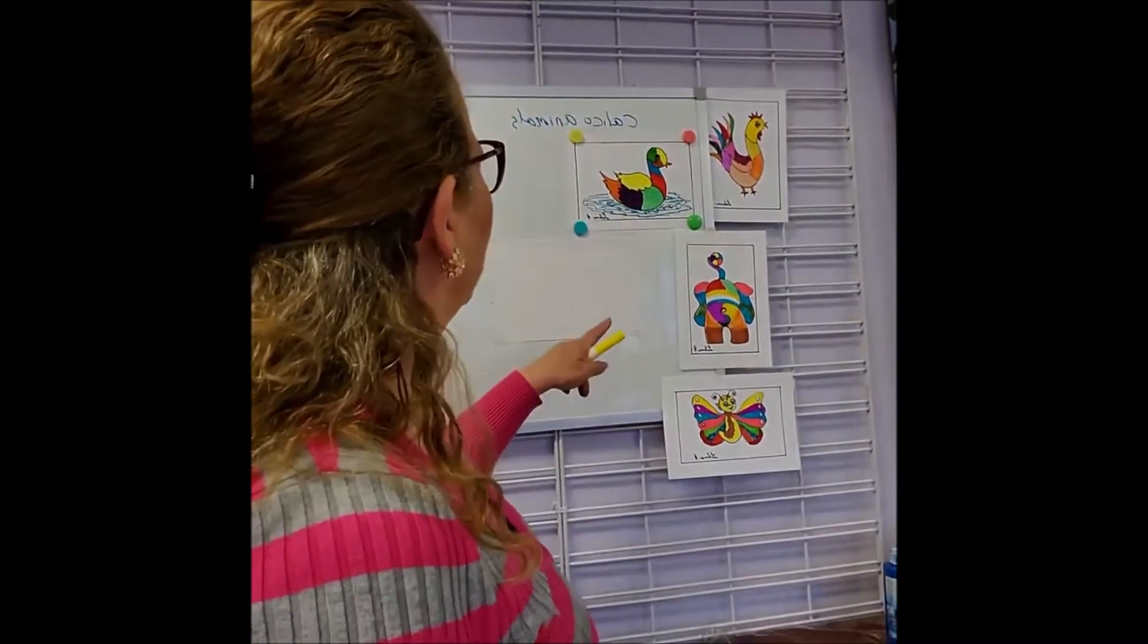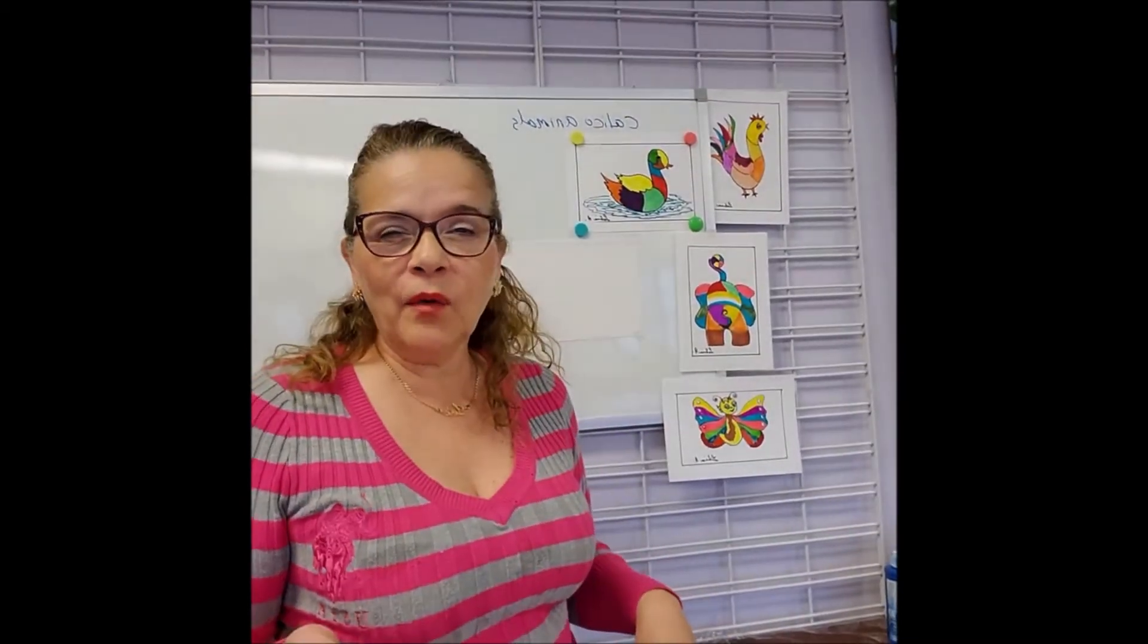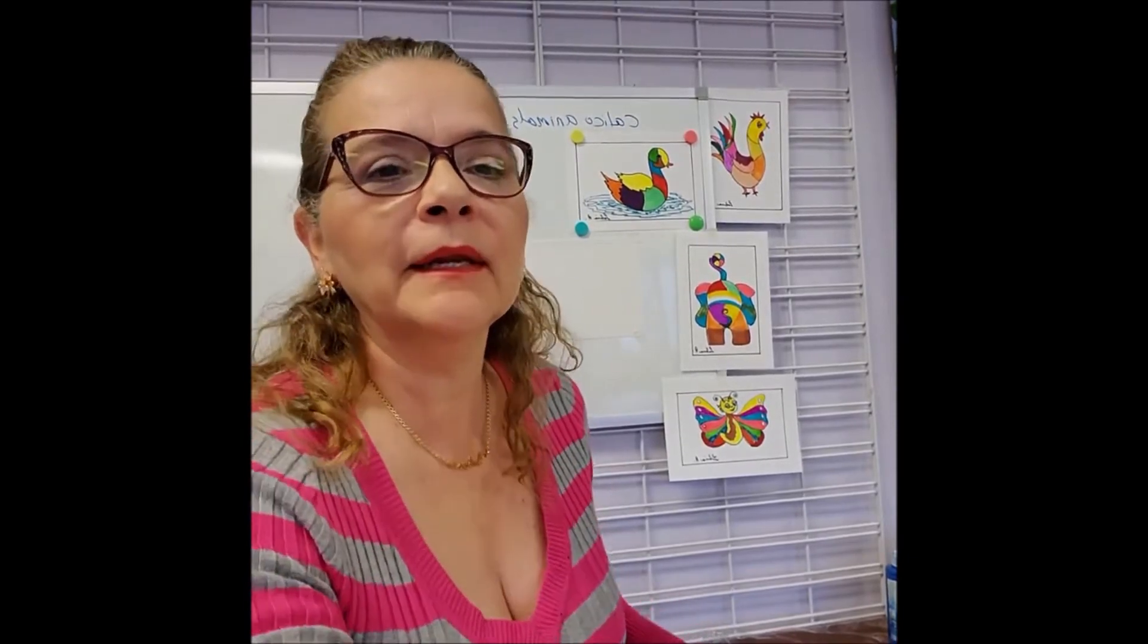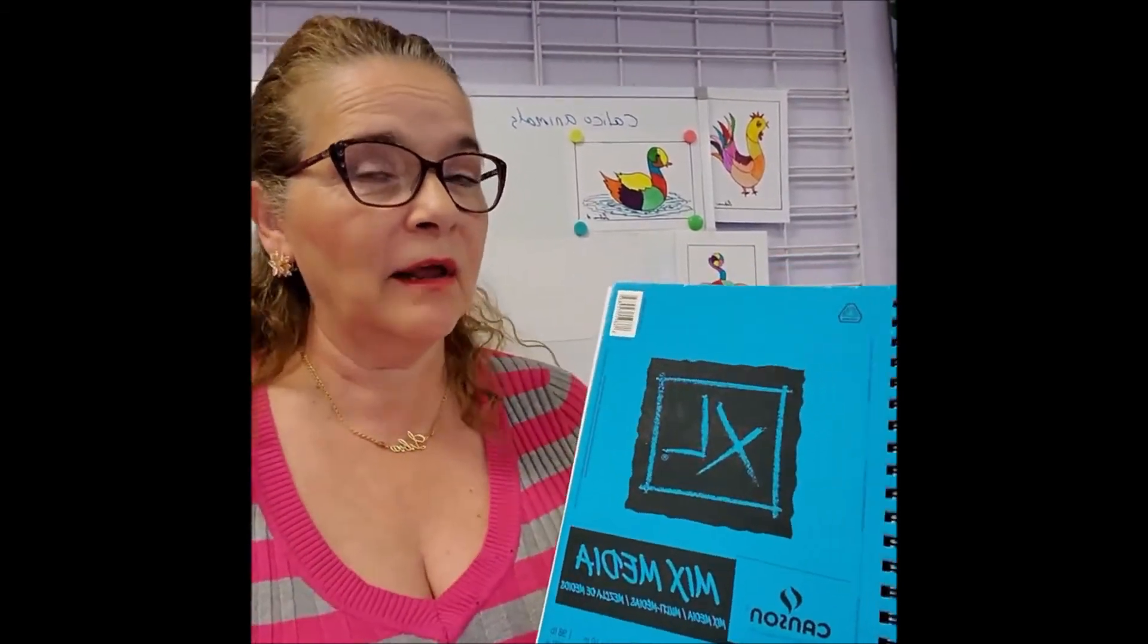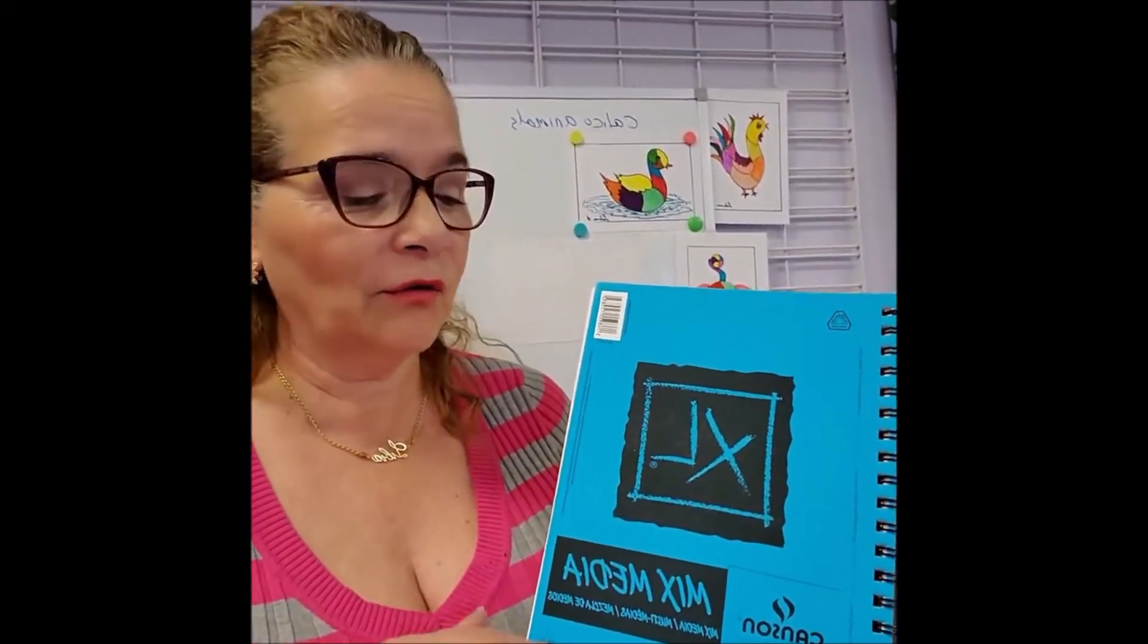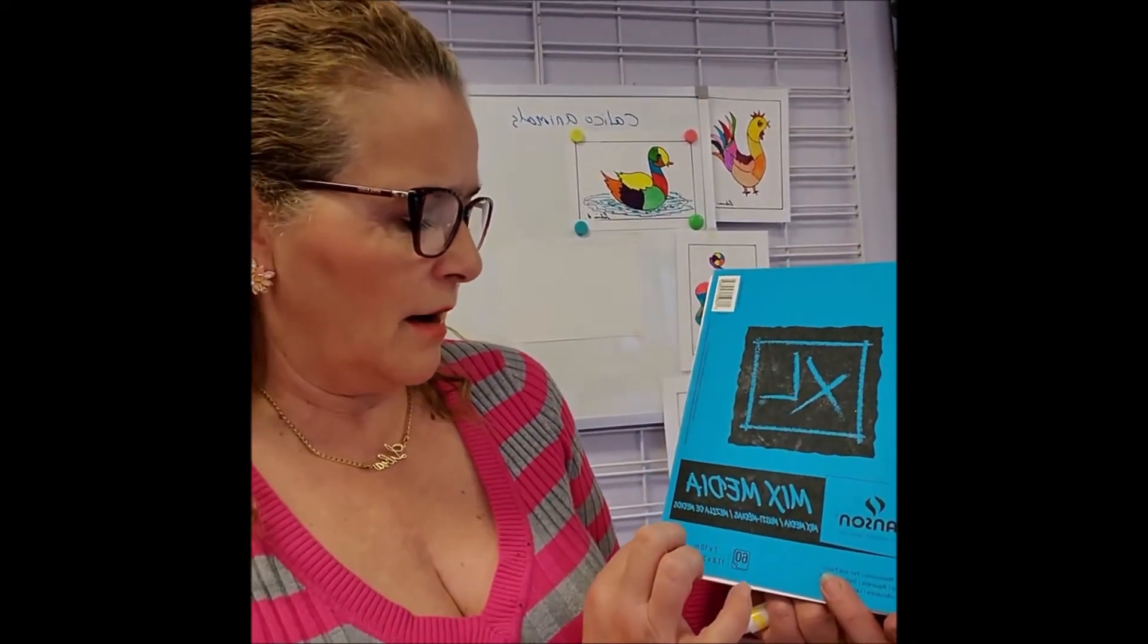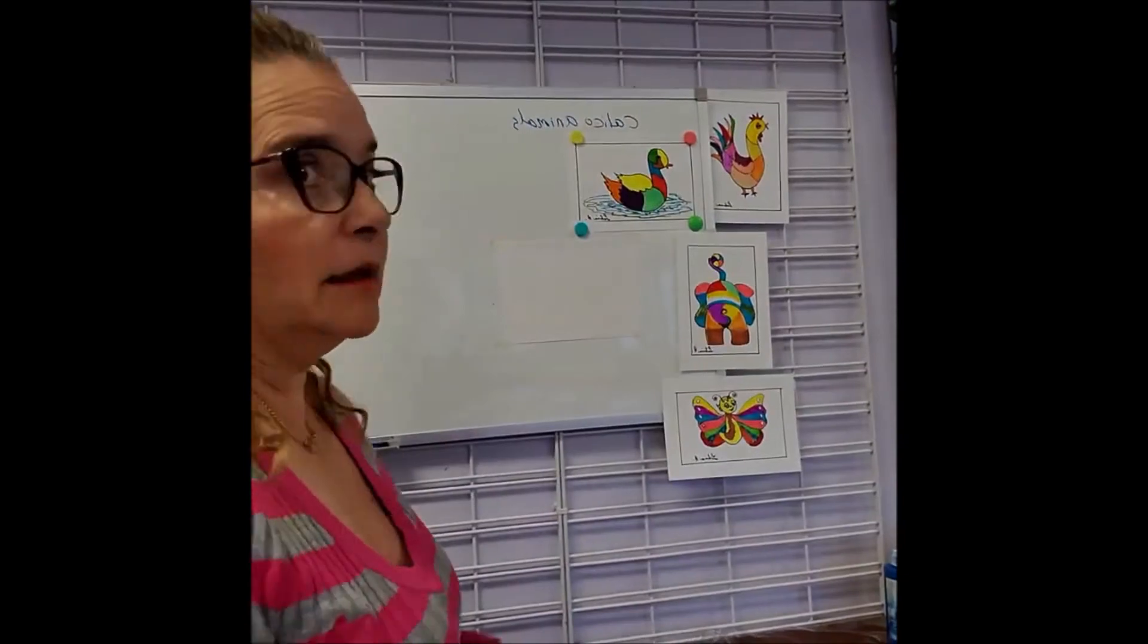Calico means multicolor and I'm going to make it here in this piece of paper. With little ones use 7 by 10 size of your paper because they get tired so easily. Use mixed media Canson 7 by 10, 98 pounds paper, any size fine.